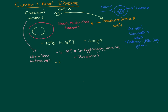Another bioactive molecule that carcinoid tumours can release is histamine — again a tiny molecule synthesised from the amino acid histidine by removing the carboxylic acid group. Finally, they can also release the enzyme kallikrein, which is not a small molecule but a whole protein. Carcinoid tumours can secrete many more bioactive molecules, but these three are particularly important ones.